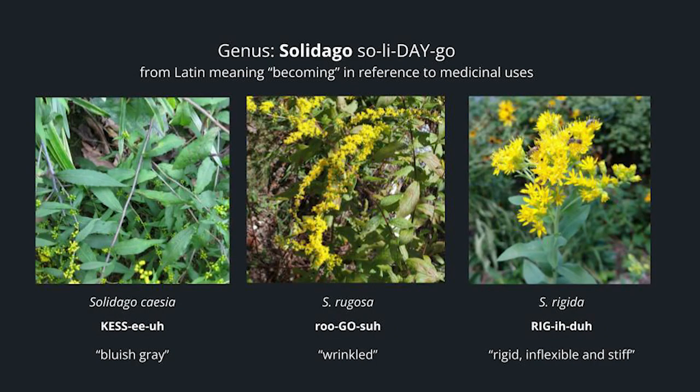Solidago — from the Latin meaning becoming, in reference to its medicinal uses. A solidago with bluish-gray stems would be Solidago caesia. A solidago with wrinkled leaves is Solidago rugosa. And if you have a solidago with rigid, stiff stems, that would be Solidago rigida.